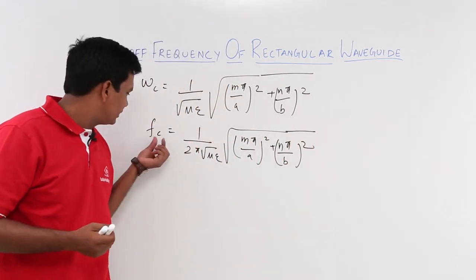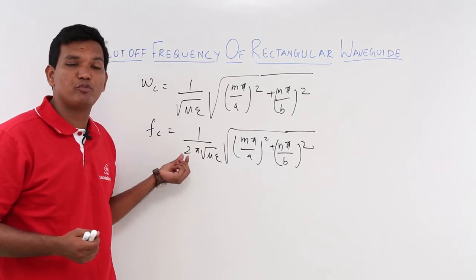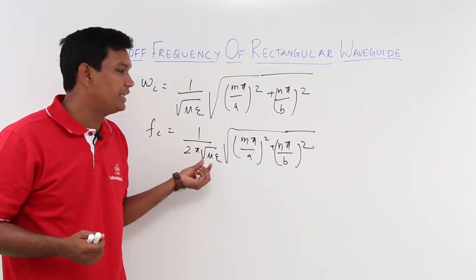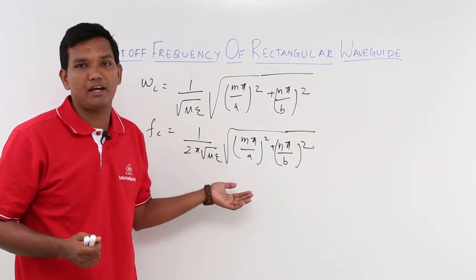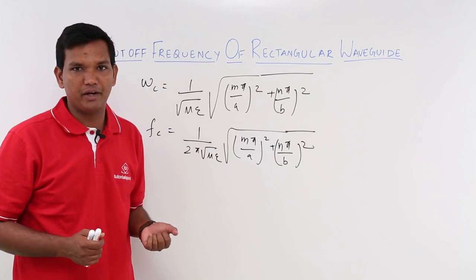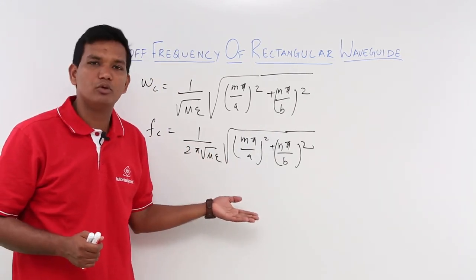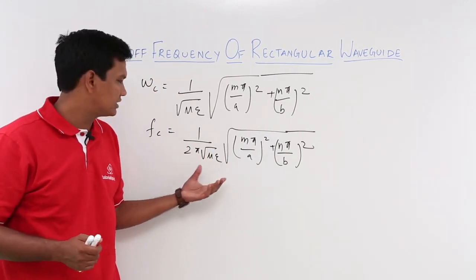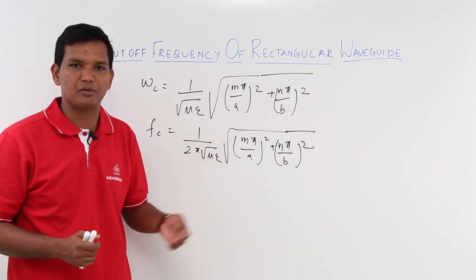This is the minimum frequency which you have to apply such that the wave is able to travel over the rectangular waveguide. It is valid for all the TE modes and TM modes — this is how you can calculate the cutoff frequency.